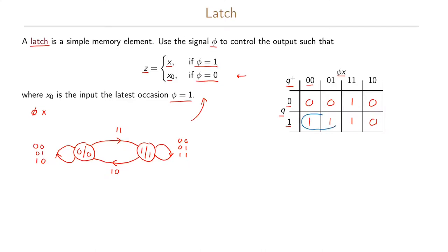Our two essential prime implicants are identified, but since we want to make this an asynchronous sequential circuit it must be hazard-free, so we also include a third prime implicant in our realization. We can then write the boolean function: q-plus equals q·phi-prime OR q·x OR phi·x. This includes all prime implicants — note that q·x is the consensus term of the other two — and the output z is simply equal to the state q.